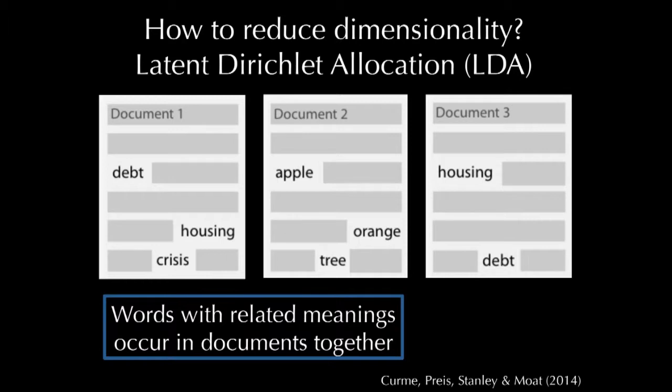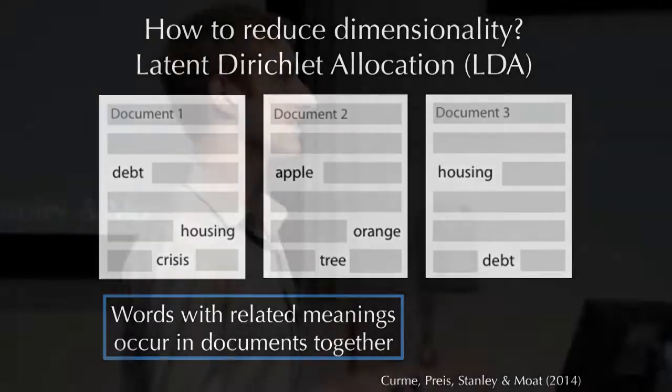LDA leverages the simple observation that words with related meanings tend to occur in documents together. For example, the word 'debt' is more closely related to the word 'housing' than it is to the word 'orange,' and this is reflected in the co-occurrence of these words across documents. In this way, we can hand a computer a large corpus of documents and the computer can figure out which words are related to each other without knowing anything about the words themselves per se.